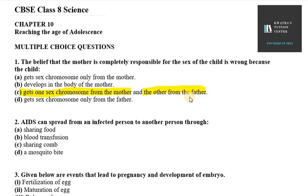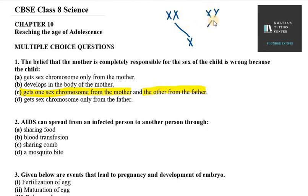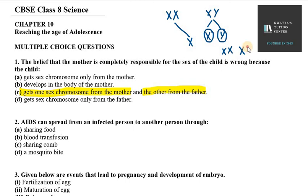Why do people think the mother is responsible? Because the woman has one sex chromosome and the father has one sex chromosome. The chromosome from the mother can only be X, but the father can give either X or Y. So XX will become a girl child and XY will become a boy child.